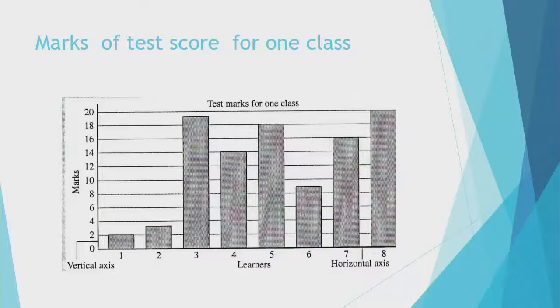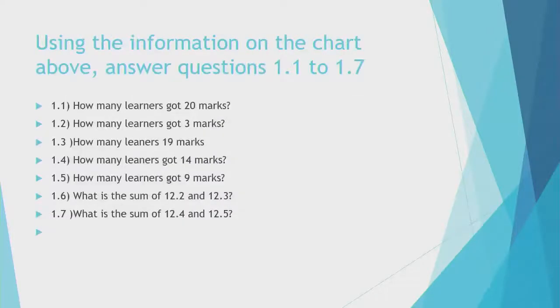The marks is the y-axis, is the dependent variable. Then the learners are the independent variable on the x-axis. Using the information on the chart above, answer questions 1 to 5. How many learners got 20 marks? How many learners got 3 marks? How many learners got 19 marks?